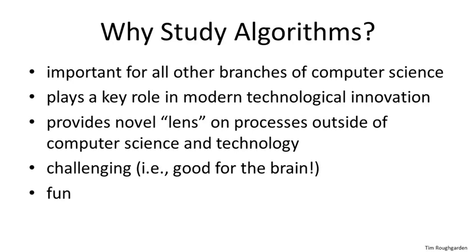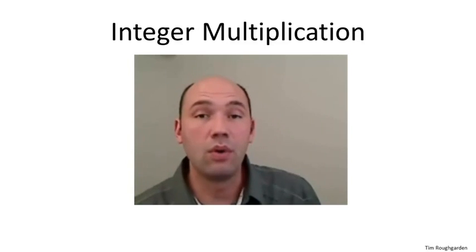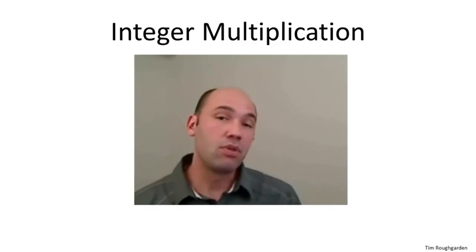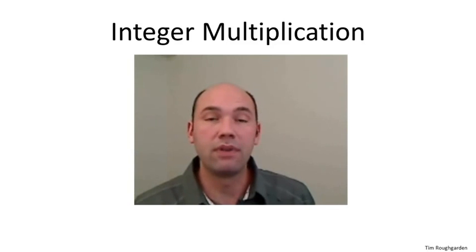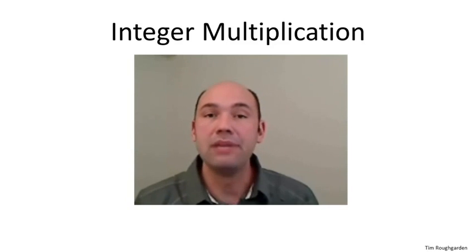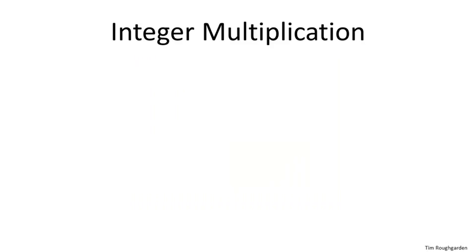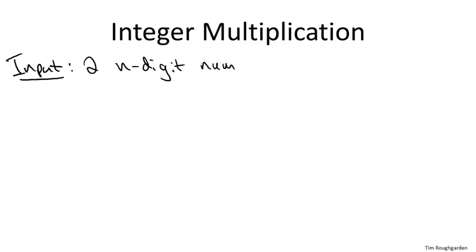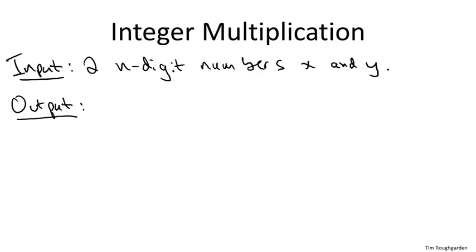So let's now descend from these lofty generalities and get much more concrete. Let's remember that we've all been learning and using algorithms since we were little kids. Once upon a time, in roughly third grade or so, you learned how to multiply two numbers. Multiplying two numbers is certainly a well-defined computational problem, and that procedure you learned back in third grade is indeed an algorithm. In this computational problem, we're given as input two numbers — let's say with n digits — and the problem is simply to compute their product, x times y.